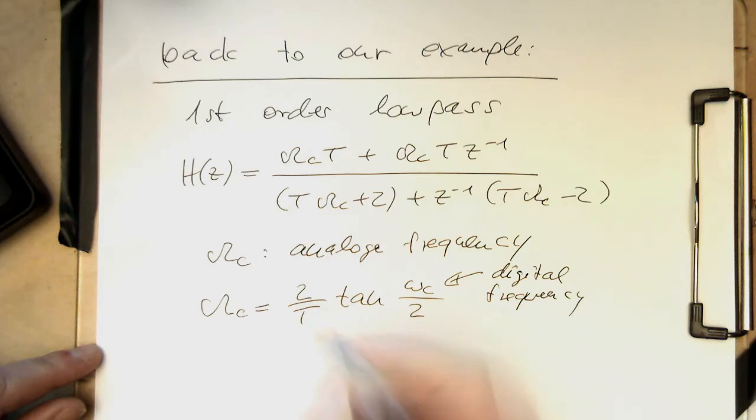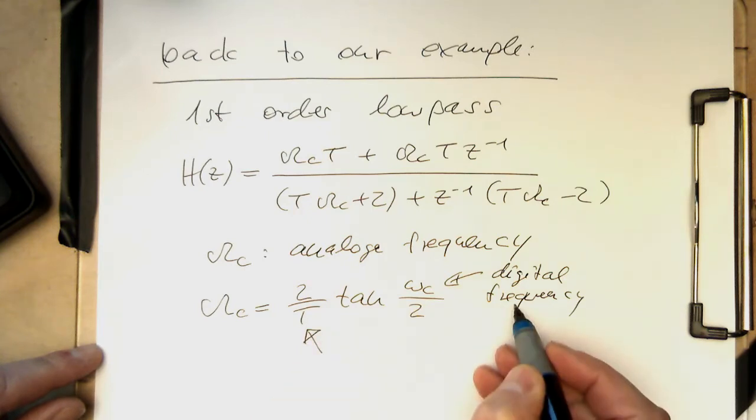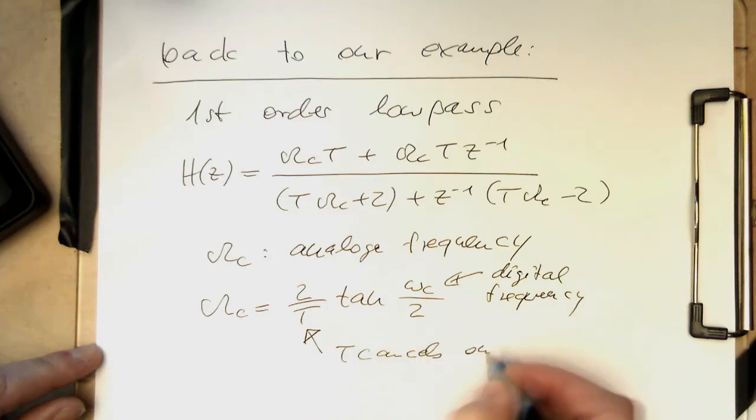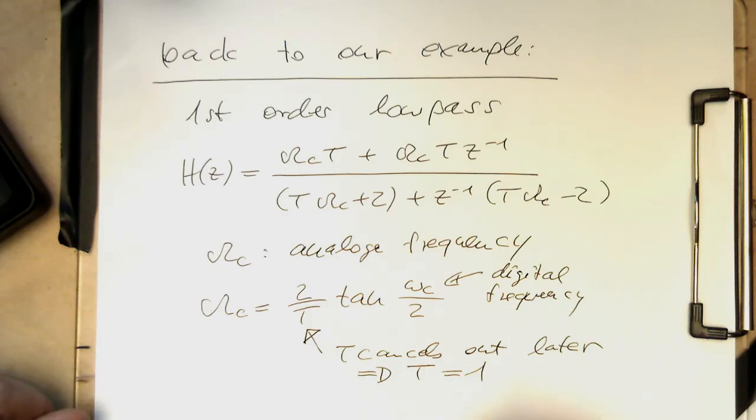Usually in the design process, because we are essentially starting with the digital frequency and the t cancels out later, we are setting t equals 1. Therefore it doesn't matter what value this has. That's our digital frequency here, and that's the analog one.